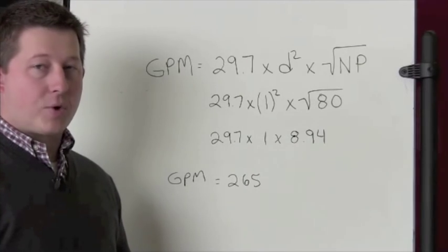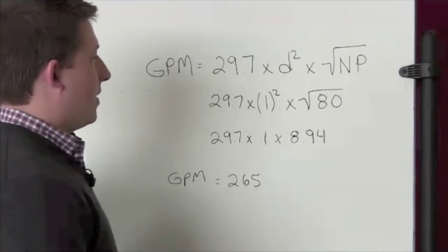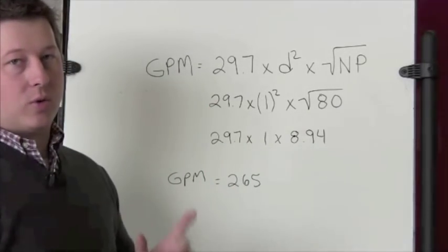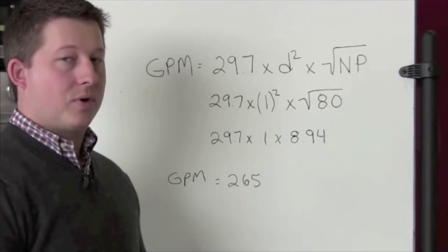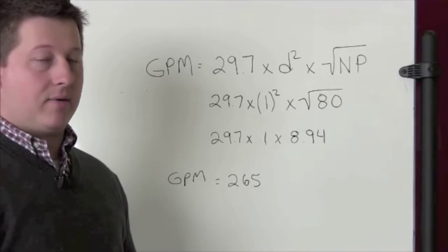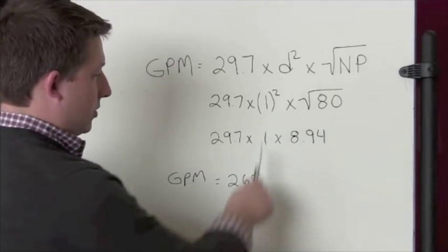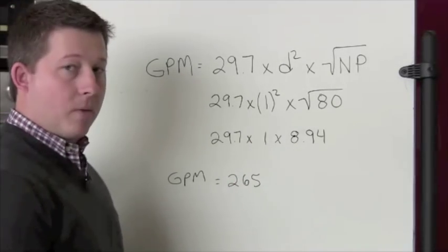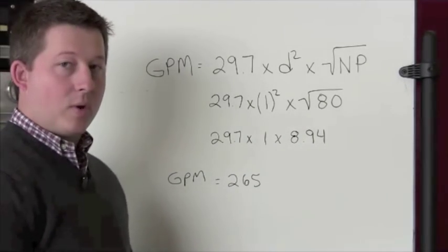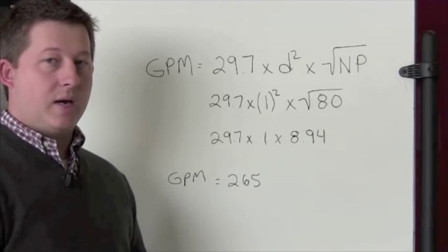I've written out the formula and worked it out on the board. We start off with 29.7 as the constant used in the formula. We multiply that times the square of the diameter — diameter squared — which is going to be one squared because we're using a one inch tip. And then we multiply that times the square root of nozzle pressure, which is 80 psi because we're using it as a master stream. So 29.7 times one squared is one, and the square root of 80 is 8.94. When we multiply it out, 29.7 times one times 8.94 gives us 265 gallons per minute coming out of that master stream nozzle at 80 psi.